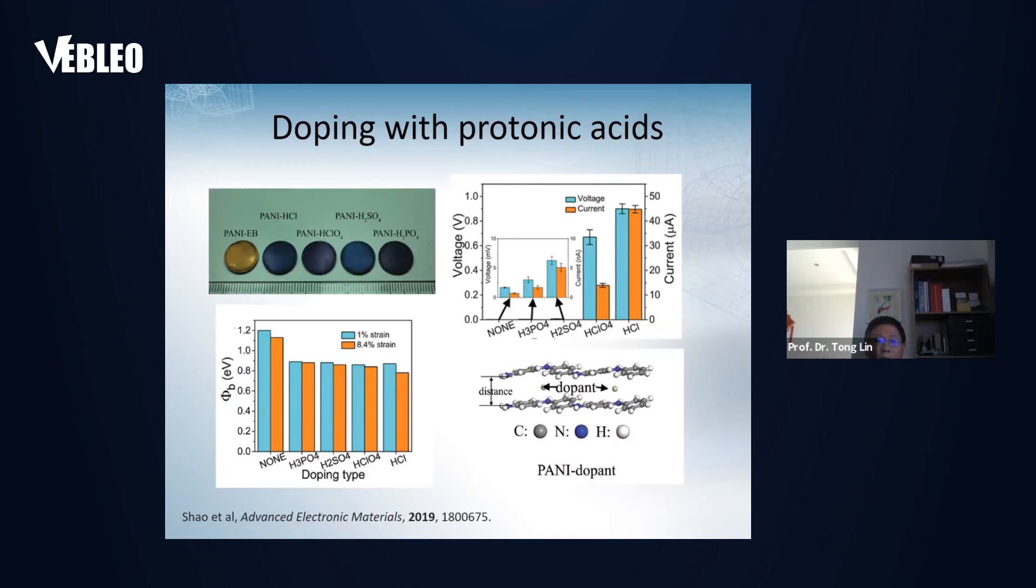We also found not only PPY, other conducting polymers like polyaniline polythiophene, when they form a Schottky junction with the metal, they have a similar DC power generation ability.